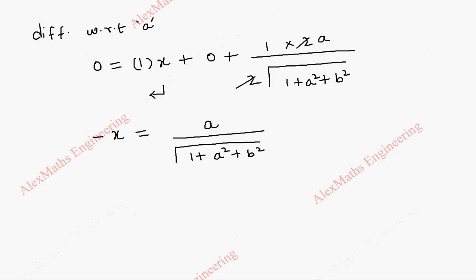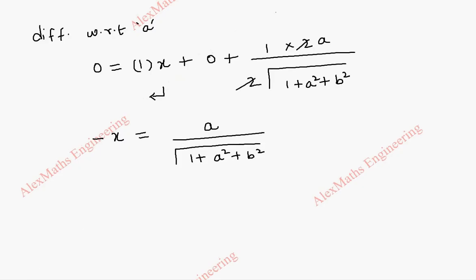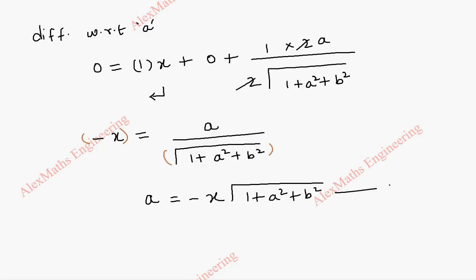By cross multiplication, we get a equal to minus x root of 1 plus a square plus b square. Let's keep this as the second expression.